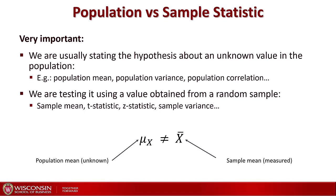To understand hypothesis testing we have to understand the distinction between the population value — sometimes called the true value — and the sample statistic. We are usually stating the hypothesis about an unknown value in the population, for instance the population mean, the population variance, or the population correlation between two variables. For instance, that could be the average height of all the students in the school of business. Then we test our hypothesis using a value obtained from a random sample, which is usually a small sample relative to the population. We will have the sample mean, which will be different from the population mean. We usually denote the population mean as mu, or mu_x if it's about variable x, and the sample mean we call x-bar, or z-bar, y-bar, and so on.